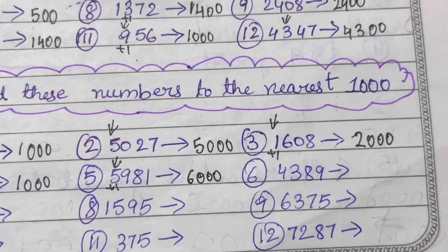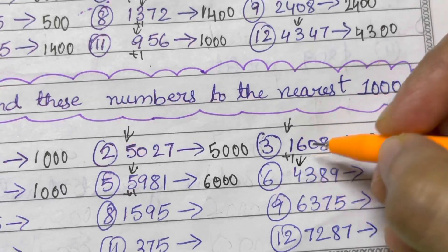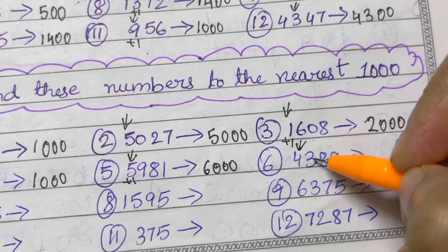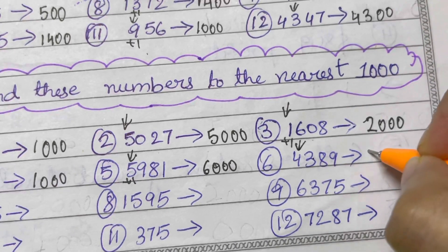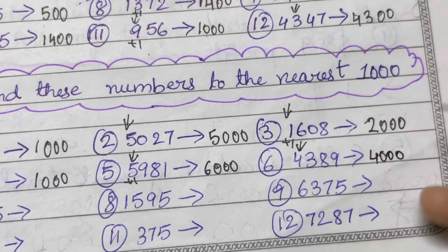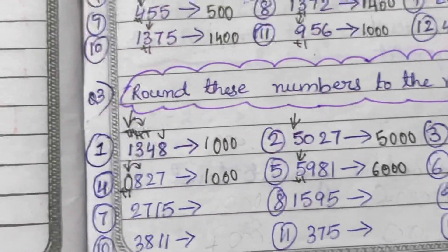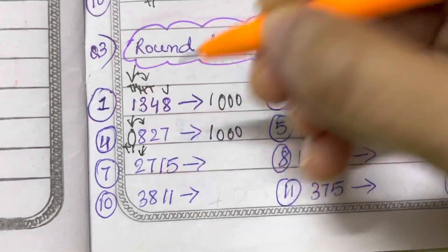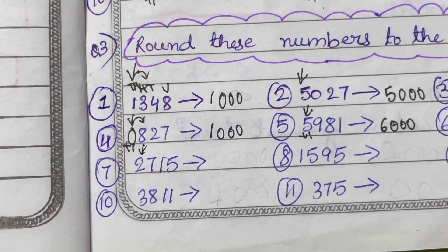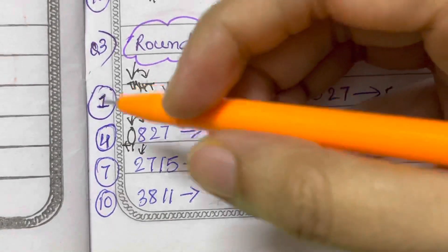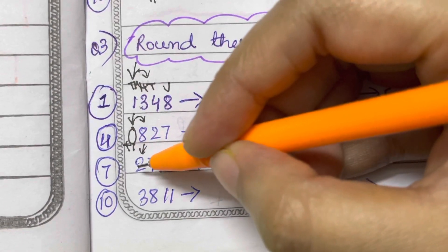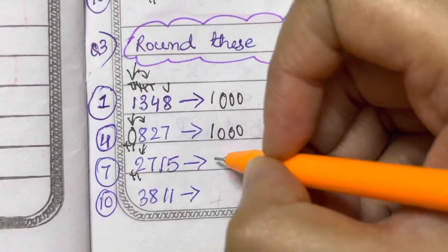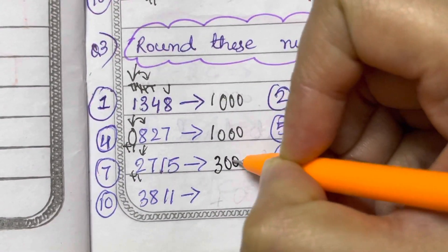4,389. The thousands place is 4, and 3 is less than 5, so 4 doesn't change — it would be just 4,000. Now 2,715. The thousands place is 2, and the digit after that is 7, which is more than 5. So we add plus 1 to 2, so it becomes 3,000.